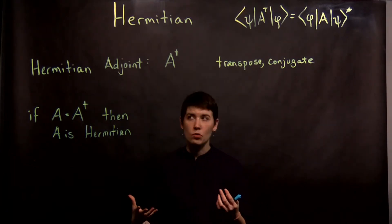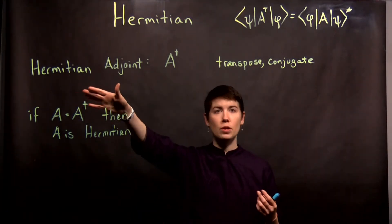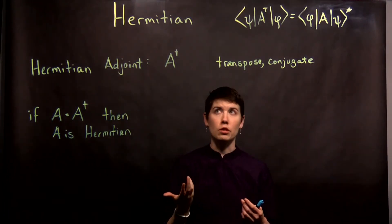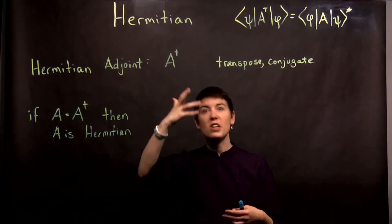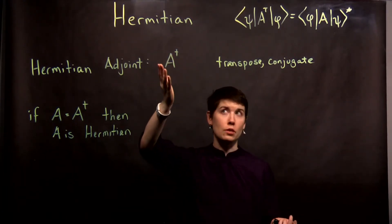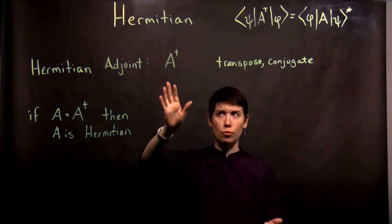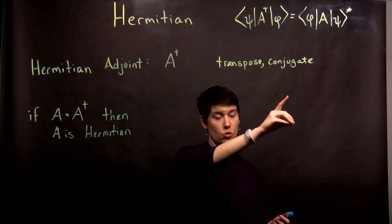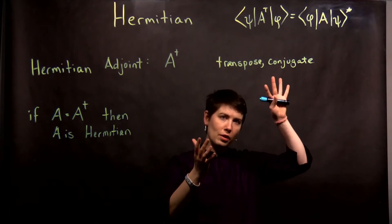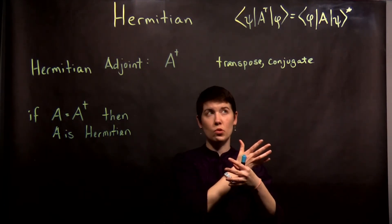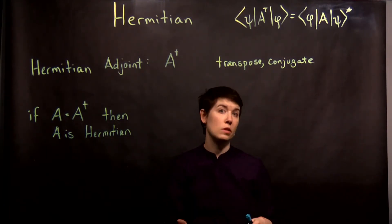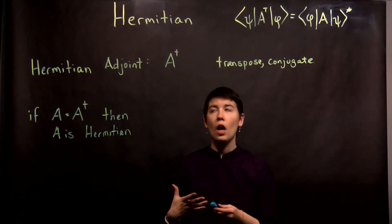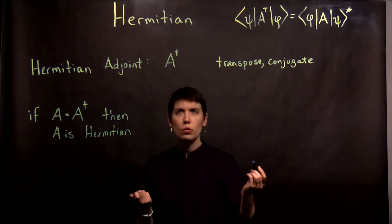So first we have to be able to know what the Hermitian adjoint of an operator is. And again, I'm saying operator because it's quantum mechanics, but it's a matrix. And what you do to create the Hermitian adjoint of a matrix is transpose it and conjugate it. So transpose is effectively flip the rows and columns. Conjugate means complex conjugate, so every time there's an i, it's now a negative i. So let me just do a quick example.